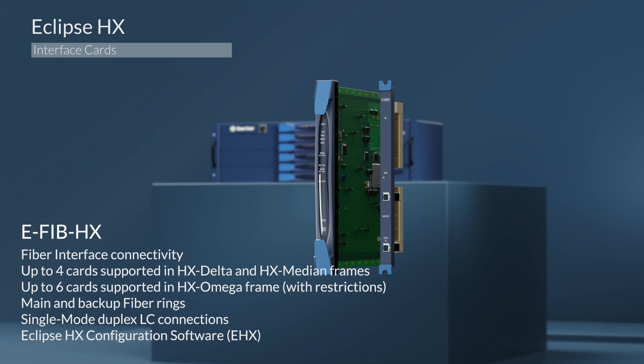The card can be configured to use between 16 to 192 ports, and can support up to 1,024 audio channels, which are allocated by the EHX to the connected matrices. Each EFIB also includes two single-mode SFB transceivers.